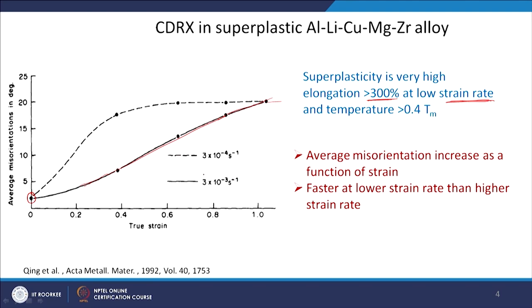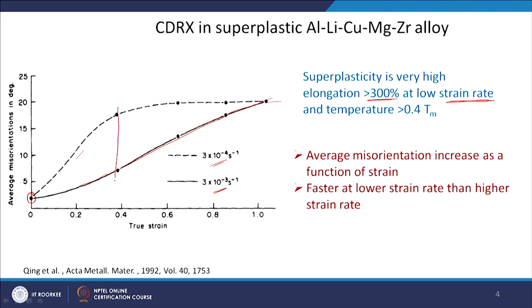Two curves are shown: the bold one is at a strain rate of 10⁻³ and the dotted one at 10⁻⁴. An interesting observation is that at lower strain rate, at a lower value of strain you are able to achieve very high average misorientation — around 17 degrees at about 0.4 strain — whereas at the higher strain rate, almost a strain of 1 is required to achieve that same average misorientation.